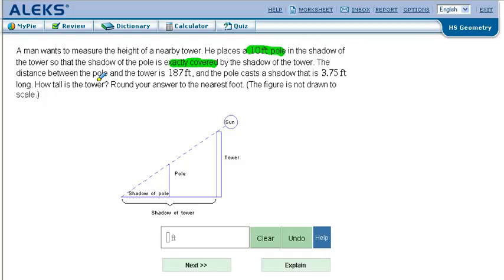The distance between the pole and the tower is 187 feet and the pole casts a shadow of 3.75 feet. How tall is the tower?